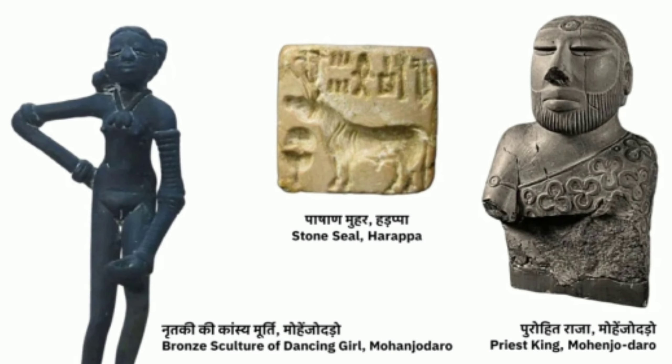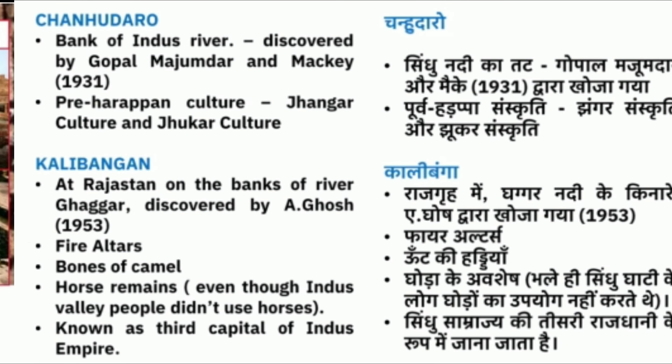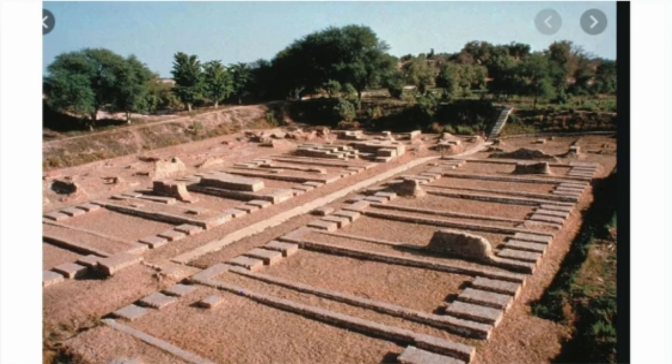We will see some images here. Here is the kushan kalin structure. Here is the snanagar (Great Bath) - the snanagar of 6-7 meters is one of the remarkable structures. Here is the north and south layout of the site.